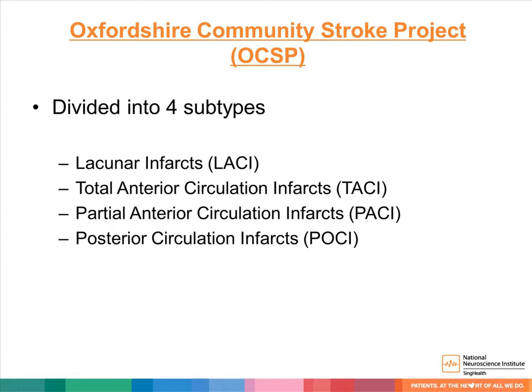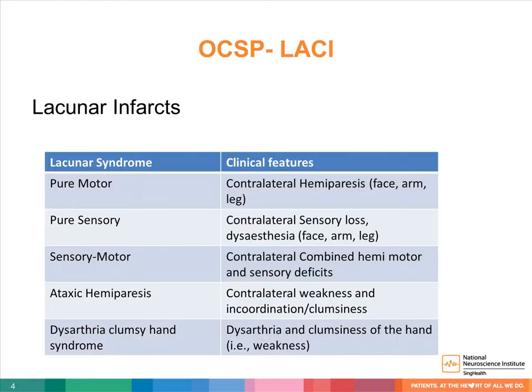The four subtypes are: lacunar infarcts, total anterior circulation infarcts, partial anterior circulation infarcts, and posterior circulation infarcts. Lacunar infarcts: patients were placed in this category if they presented with well-defined lacunar stroke syndromes. The most common were pure motor, with contralateral hemiparesis; pure sensory, with contralateral sensory loss; sensorimotor, a combination of the two; ataxic hemiparesis, with contralateral weakness and incoordination; and finally, clumsy hand dysarthria syndrome.